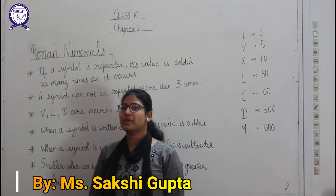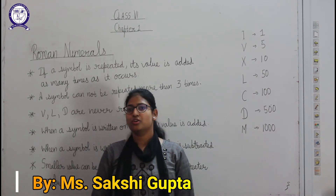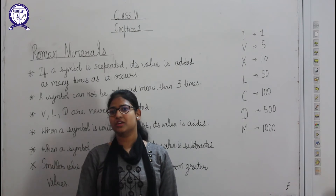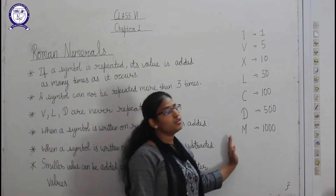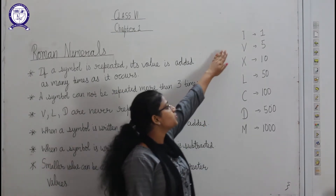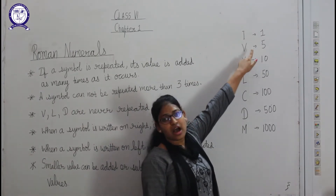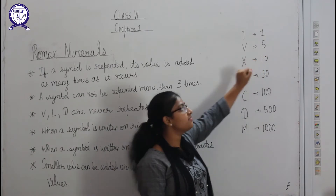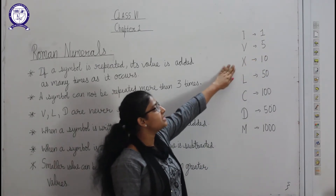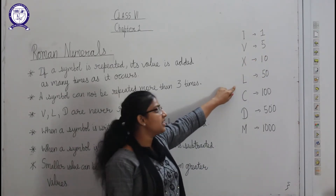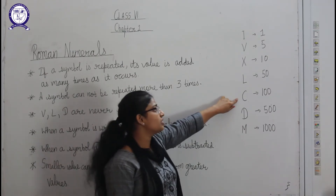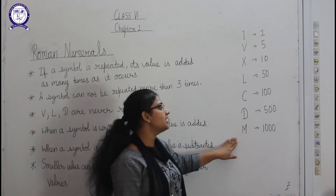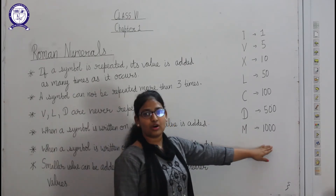Our next topic is Roman numerals, which you have studied in earlier classes. Here are the symbols we use: I is used for one, V is used for five, X is used for ten, L is used for fifty, C is used for hundred, D is used for five hundred, and M is used for thousand.